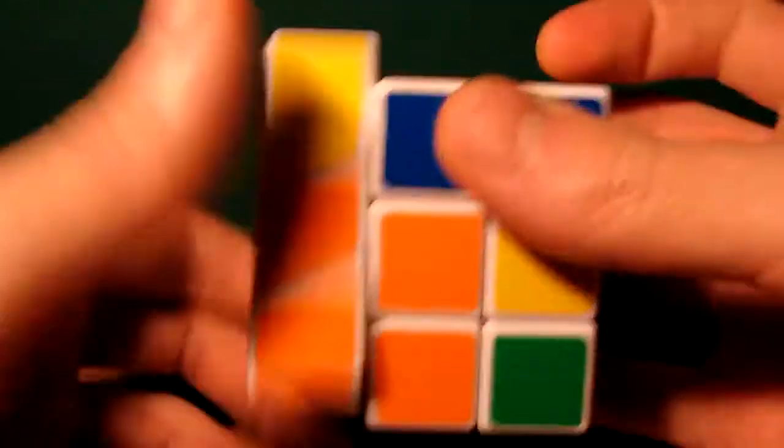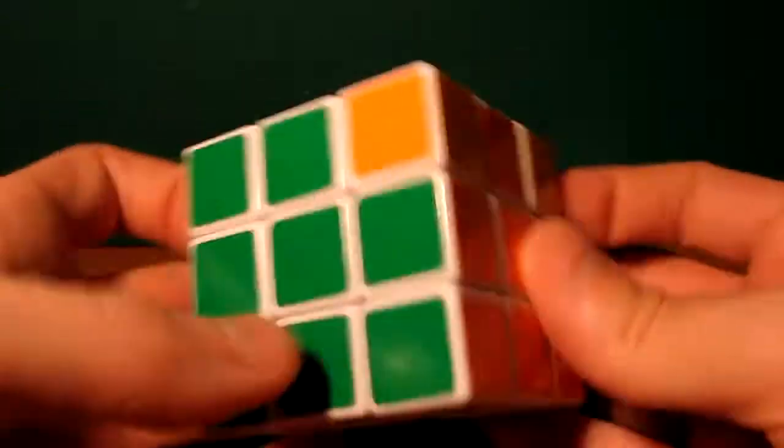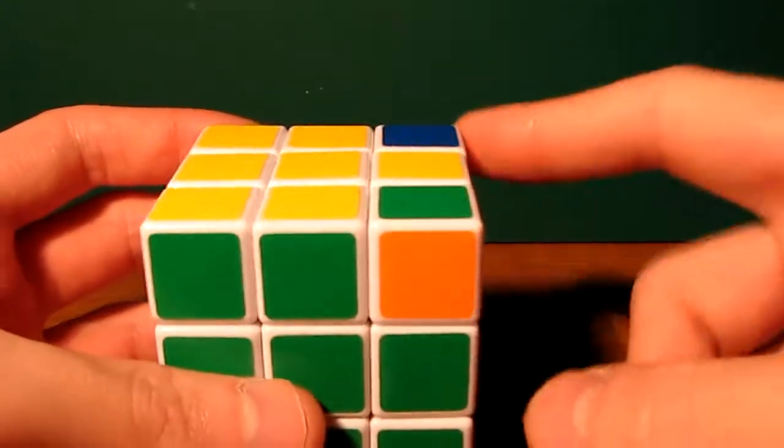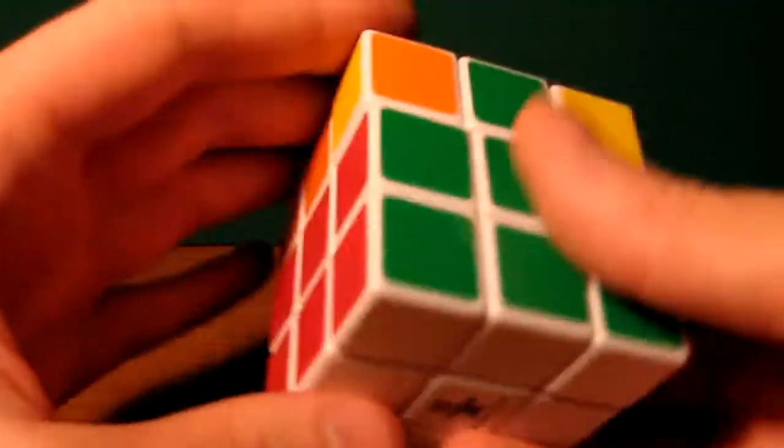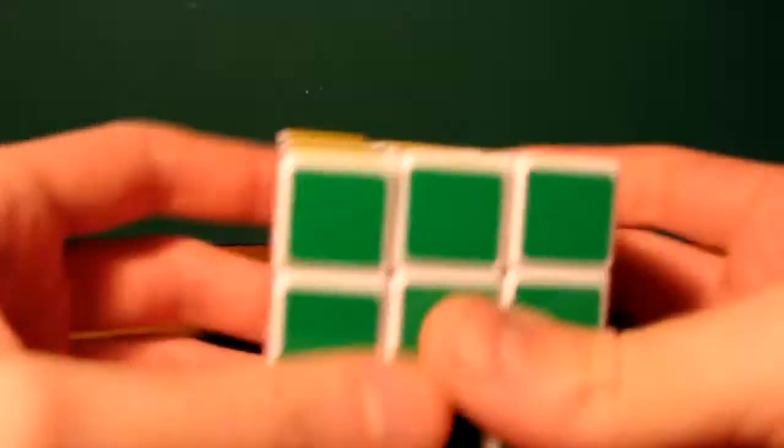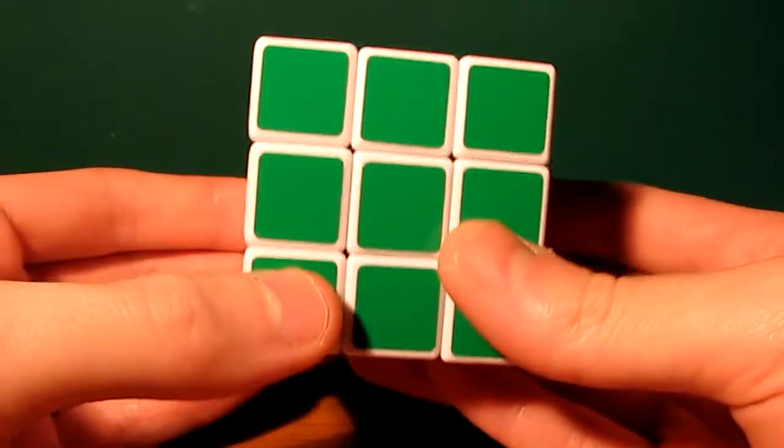After that, the corner pieces in the right place. And there we go. All the corner pieces are in the right place. Now we have to orient the corner pieces. Simple. And epiphany. The cube is done.